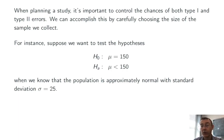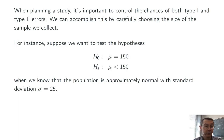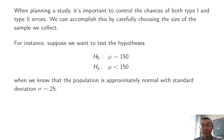Suppose we want to test the null hypothesis that the population mean we're interested in is 150, against a one-sided alternative that that population mean is actually less. To keep things simple here, let's assume that we know that the population is approximately normally distributed with a standard deviation of sigma equals 25.